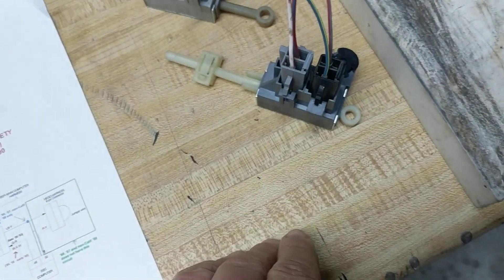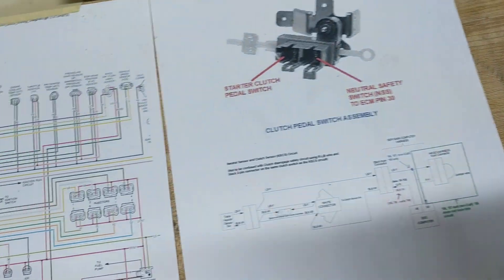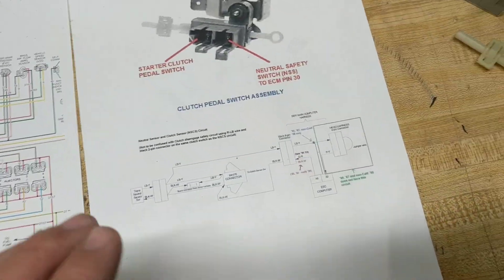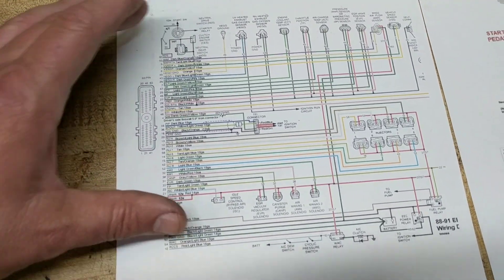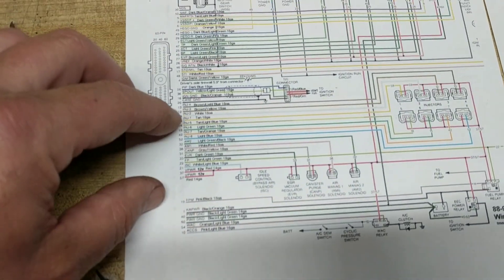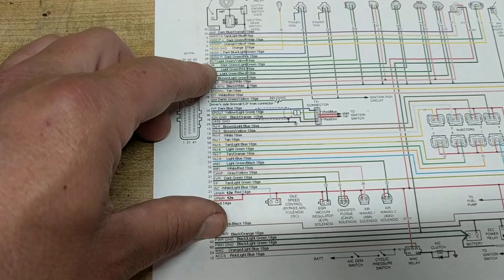This is only for EFI cars. So let's see what else. This EFI, the EEC harness. This has got all the wire numbers and the pins, what they do.